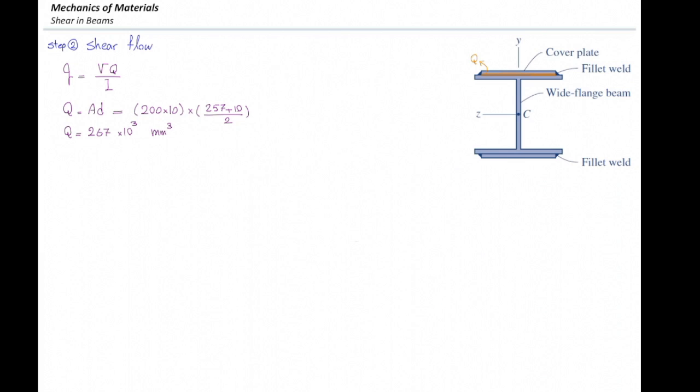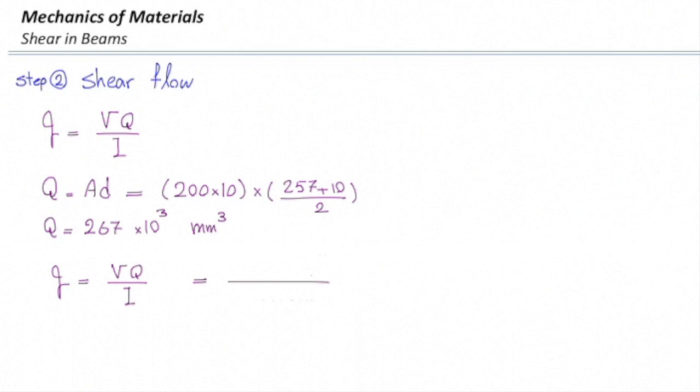We have determined Q, we have determined I, and we are looking for V. Let me first write it down here numerically. So V times Q over I would be equal to V divided by 737.8.